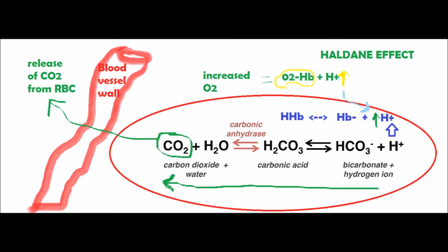The Haldane effect takes place in the lungs. The binding of hemoglobin to oxygen increases hydrogen ions. The increase in hydrogen ions then in turn increases carbonic acid, which increases carbonic anhydrase enzyme to make more CO2, which is then released from the red blood cells.